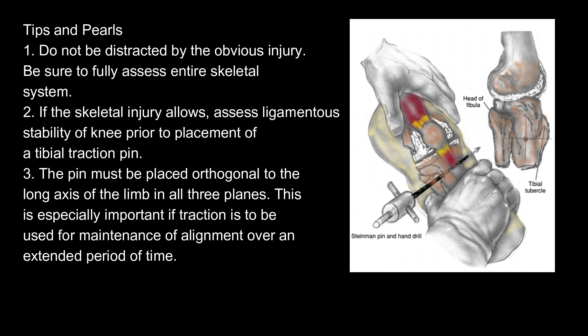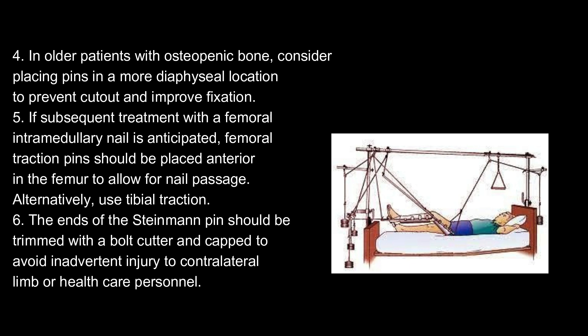Tips and pearls: 1. Do not be distracted by the obvious injury — be sure to fully assess the entire skeletal system. 2. If the skeletal injury allows, assess ligamentous stability of the knee prior to placement of a tibial traction pin. 3. The pin must be placed orthogonal to the long axis of the limb in all three planes; this is especially important if traction is to be used for maintenance of alignment over an extended period. 4. In older patients with osteopenic bone, consider placing pins in a more diaphyseal location to prevent cutout and improve fixation.